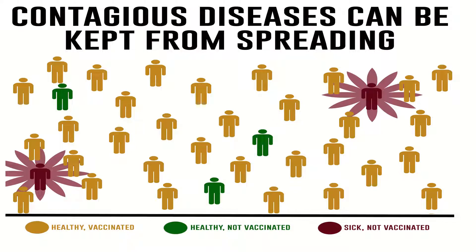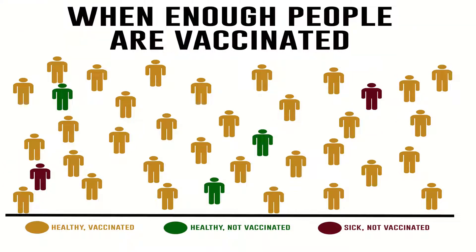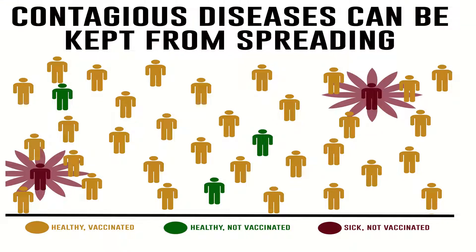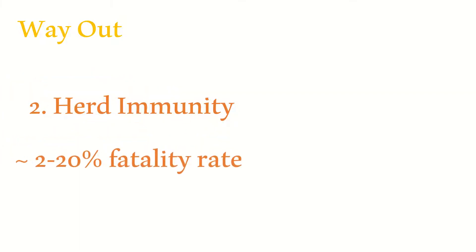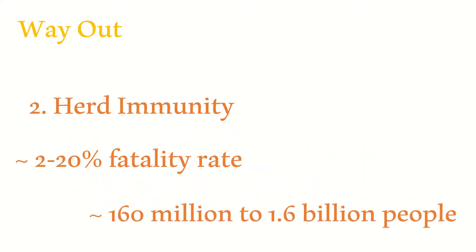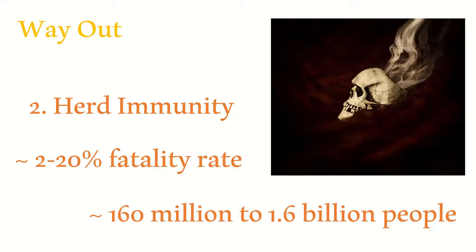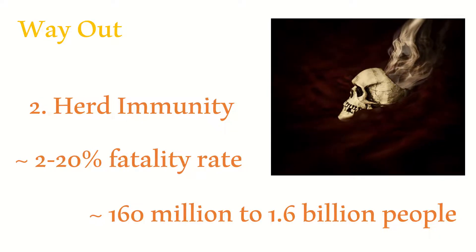Another way is to let everybody out and build herd immunity. This means people will quickly get exposed, the majority will recover, and eventually the disease will stop spreading. But this herd immunity strategy may cost a lot of human lives — anywhere from 2 to 20 percent of infected people may die, killing between 160 million to 1.6 billion people. It will also put enormous pressure on health systems, which they may not be able to bear. So this option is pretty much out of the window.